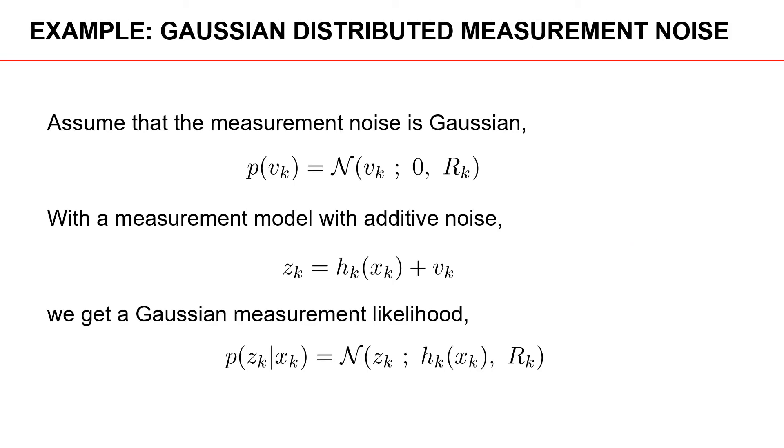Let's have a look at an example where we have Gaussian distributed measurement noise. So the density for the measurement noise is Gaussian with zero mean and covariance R. If we have a measurement model with additive noise, then we get a Gaussian measurement likelihood. So the density for the measurement Z given the state X is Gaussian with mean described by the measurement function H with the object state as input, and the covariance is the measurement noise covariance R.